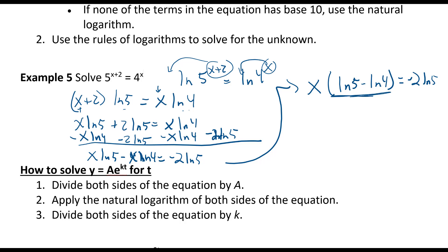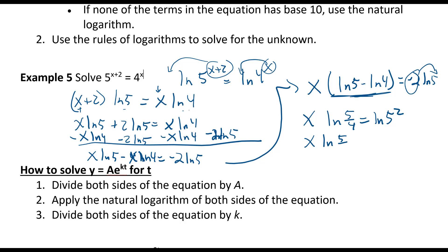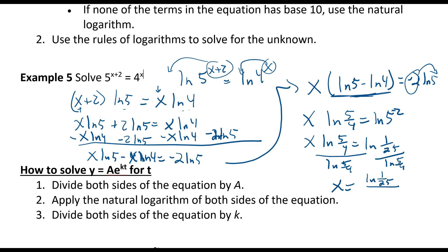Using our rules for logarithms, ln5 minus ln4 combines to ln(5/4). On the right side, negative 2·ln5 can be written as ln(5^(-2)), which equals ln(1/25). So x times ln(5/4) equals ln(1/25). Dividing both sides by ln(5/4) gives x equals ln(1/25) over ln(5/4).